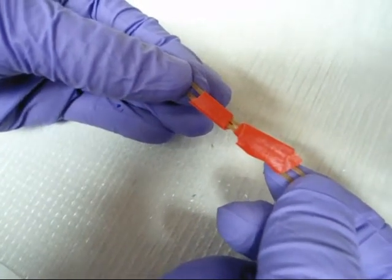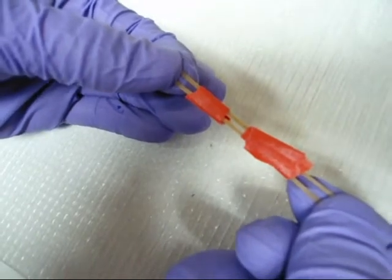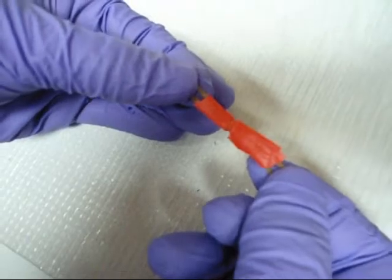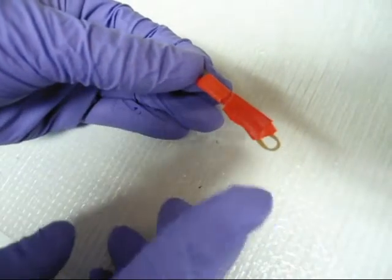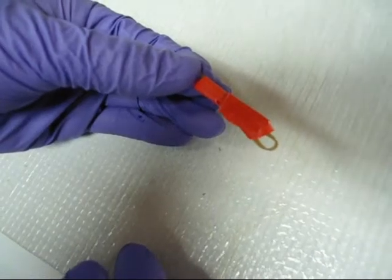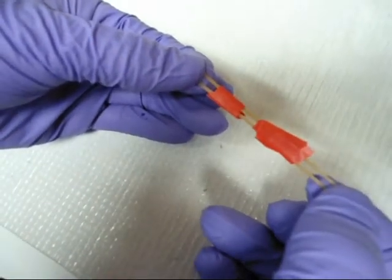This is just like what is happening in our conducting rubber composite. Originally, two graphite particles are touching each other. However, if I am going to stretch them, they are going to separate and the system turns insulating.